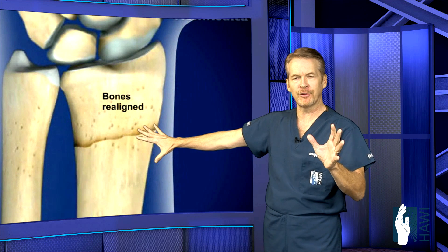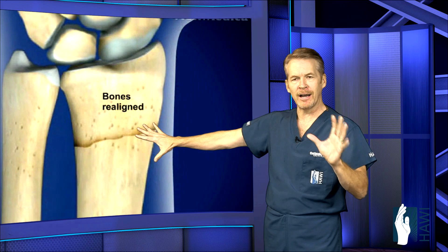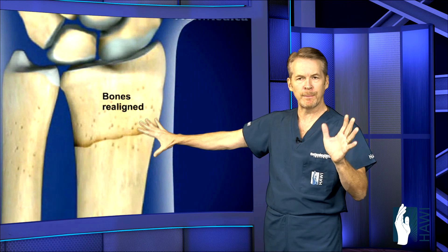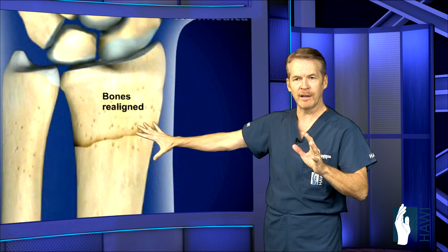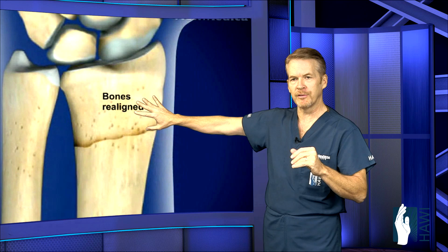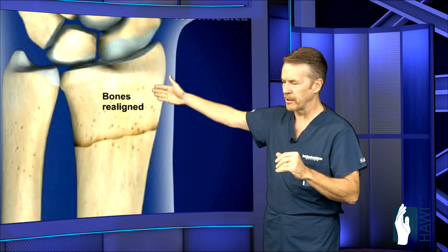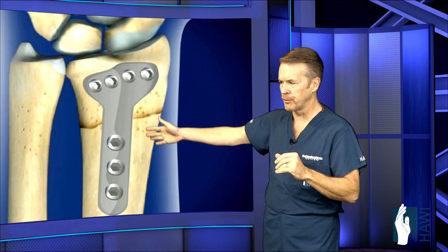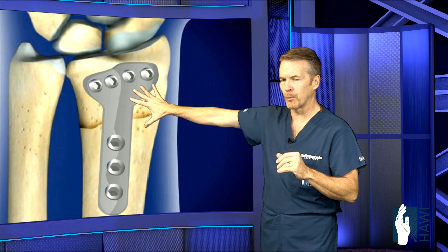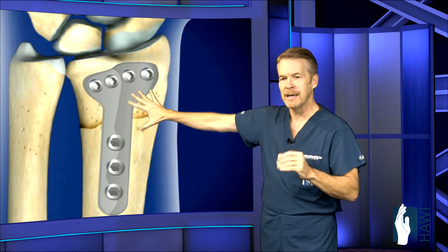In surgery, you're knocked out for about 30 minutes, we put these back in place, and then frequently we'll actually cut open the skin and go in and put a plate and screws, as you can see here, on the front of the wrist.